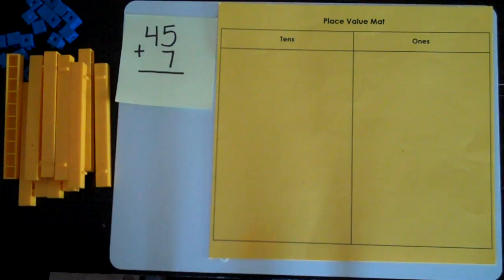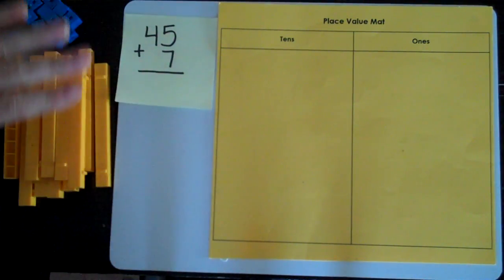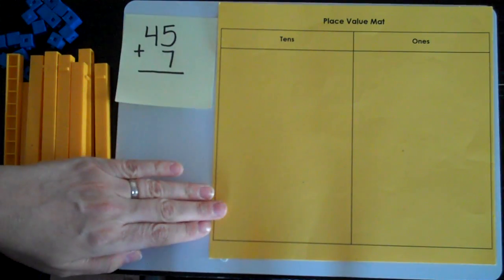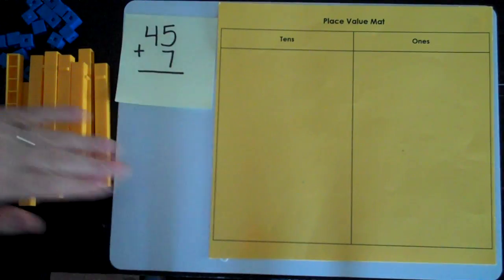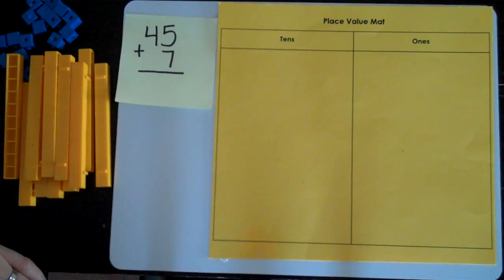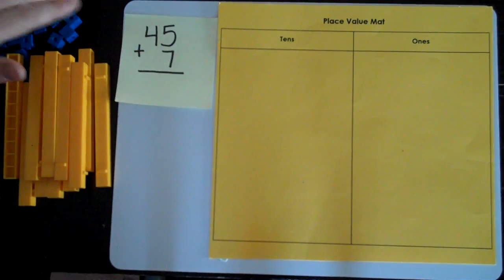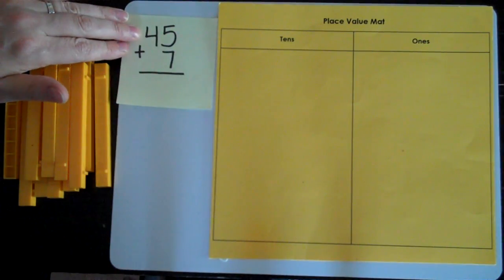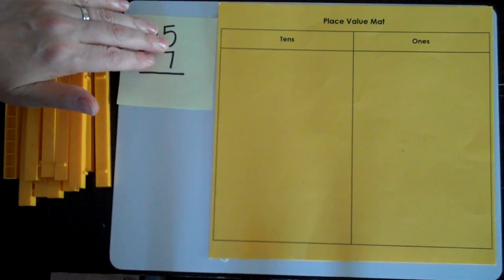The question I'm going to start with is 45 plus 7. So I have my place value mat and I have my base 10 materials. If you don't have these at home you can draw a place value mat on a piece of paper and you can cut out base 10 materials or print them off of the internet fairly easily. Once you have your materials ready you're always going to start with the first number and think about the ones place.